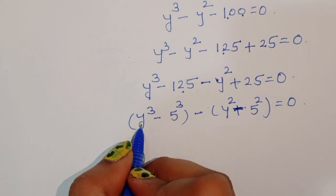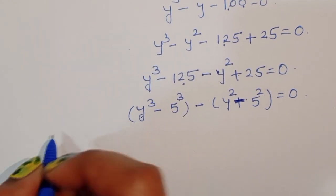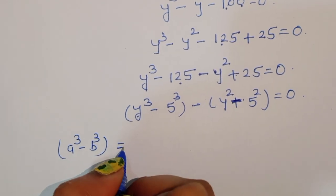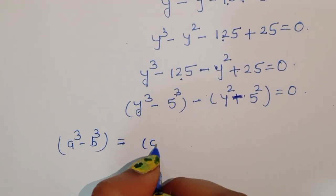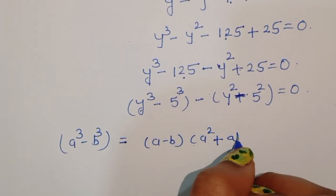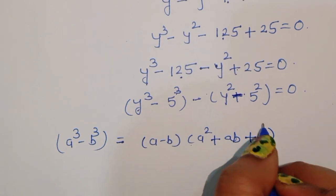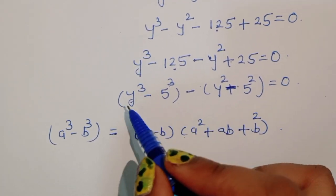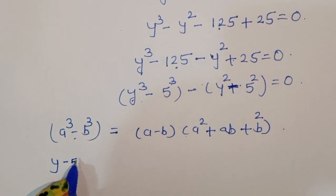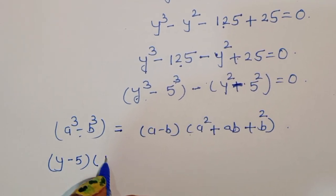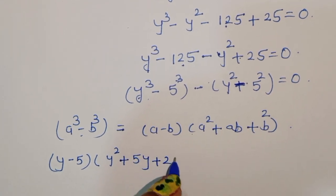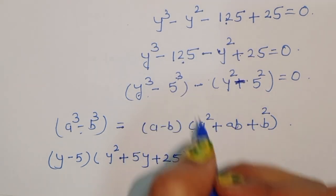Now y cubed minus 5 cubed. Using the formula a cubed minus b cubed equals a minus b times a squared plus ab plus b squared, we can write this as y minus 5 times y squared plus 5y plus 25.